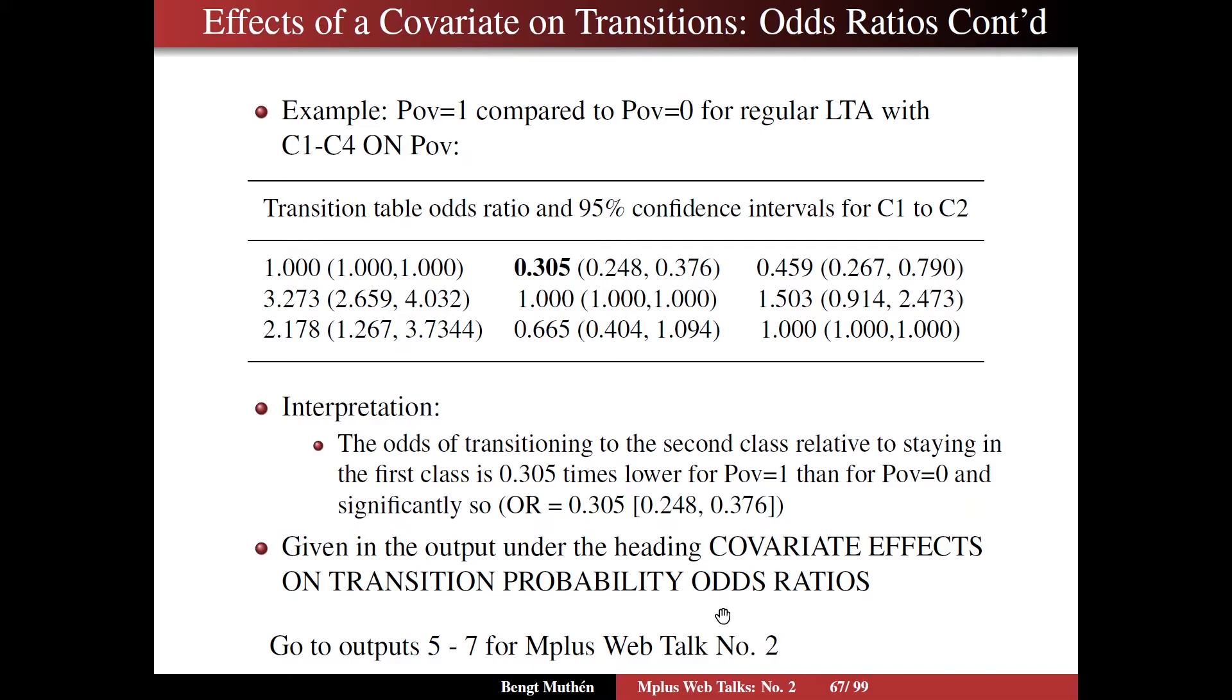So here's what it looks in a real example, then. This is for model 3 and run 6 on slide 67, run 6. Here we compare poverty equals 1 with poverty equals 0, for regular LTA, with C1, C4 on poverty.